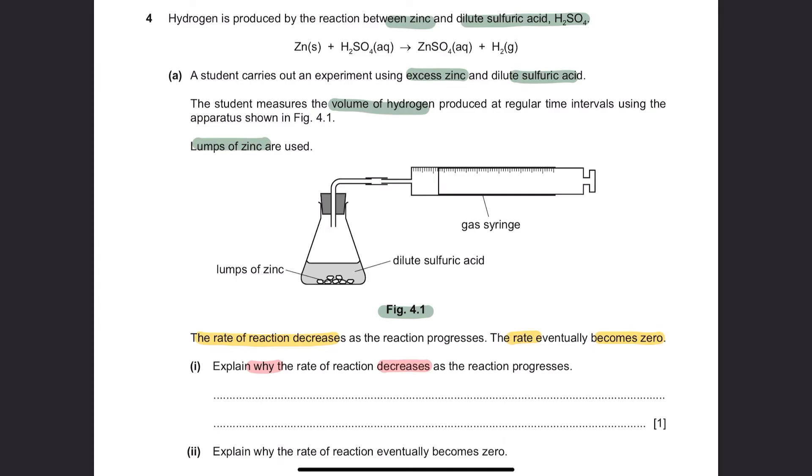Part 1. Explain why the rate of reaction decreases as the reaction progresses. In the beginning of the reaction, the concentration of sulfuric acid is the highest. Therefore, the collision frequency is at the greatest, resulting in the highest rate of reaction. As it is being used up, the concentration decreases, leading to the collision frequency becoming lower. Hence, the rate of reaction decreases. Since you are only given with 1 mark, you can just talk about the concentration or the rate of collision.